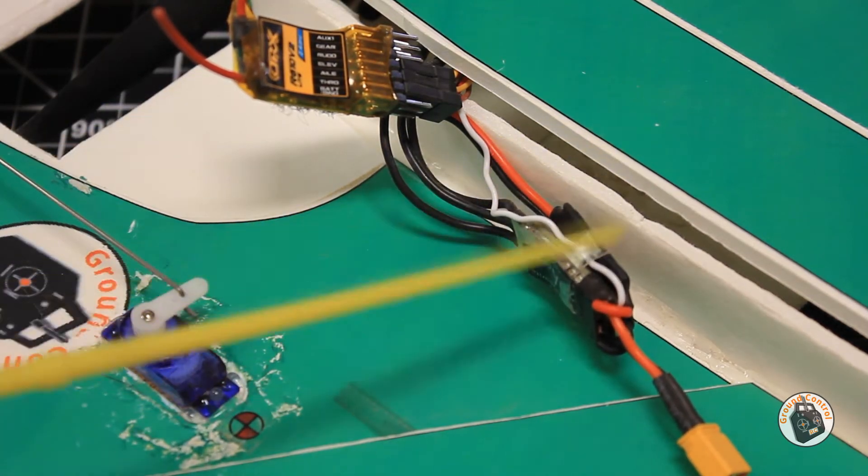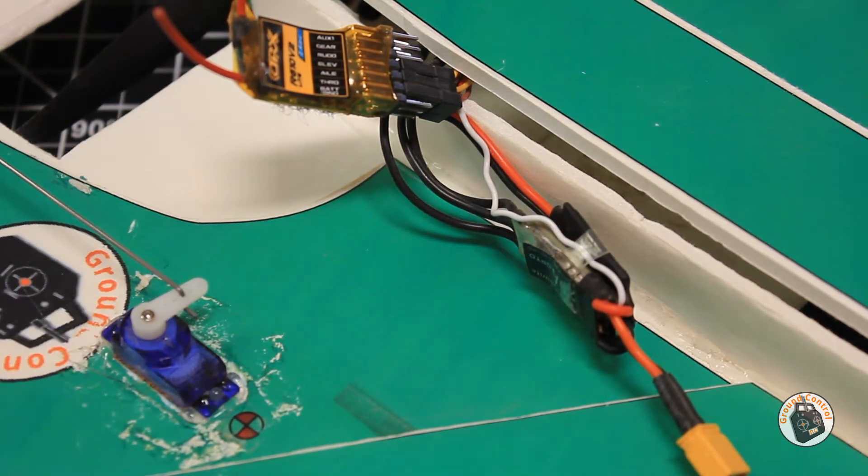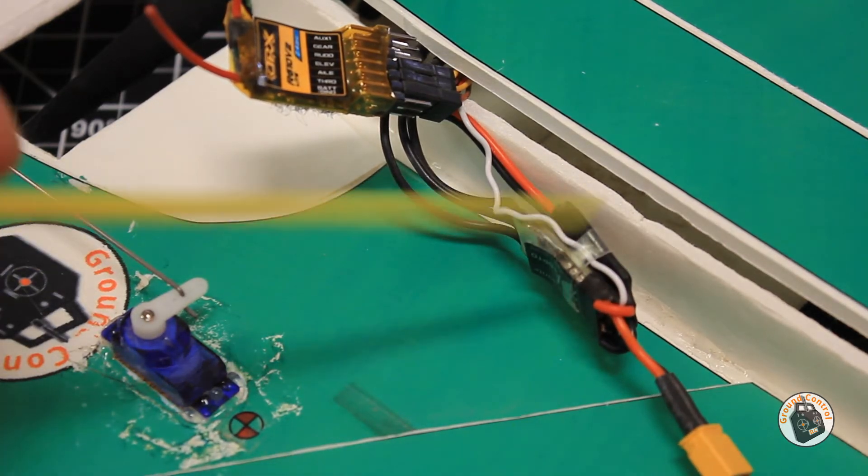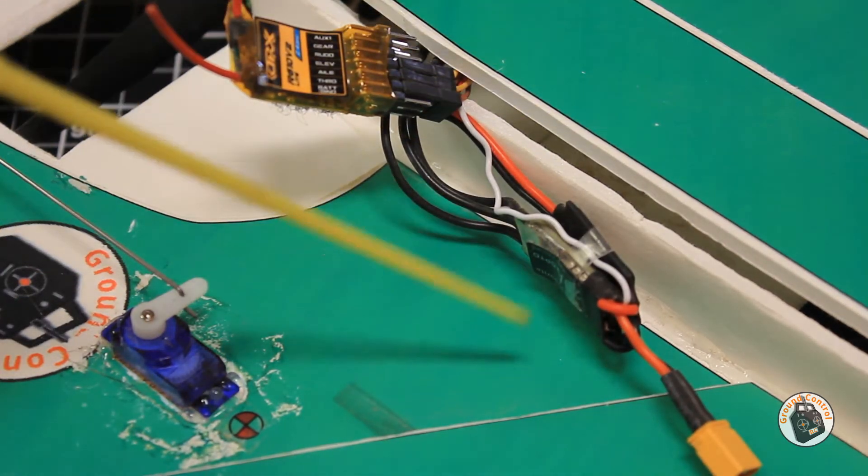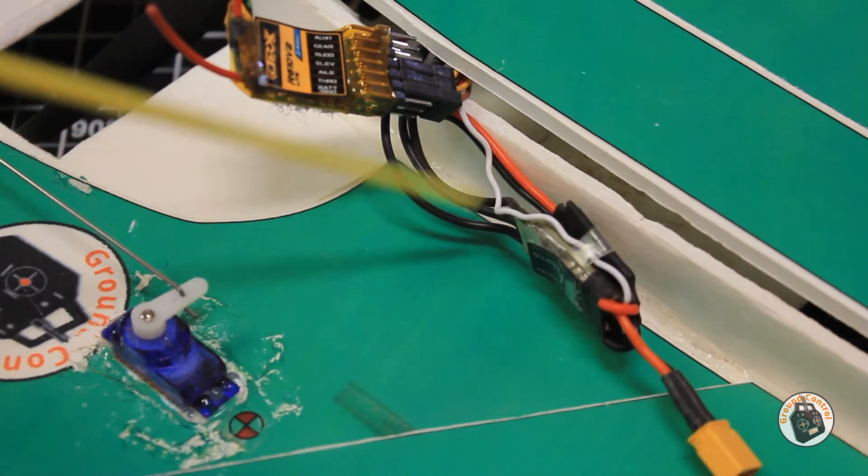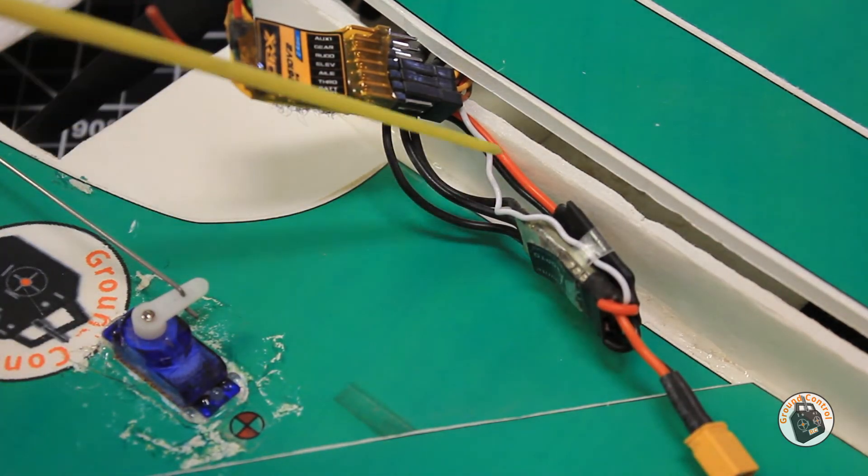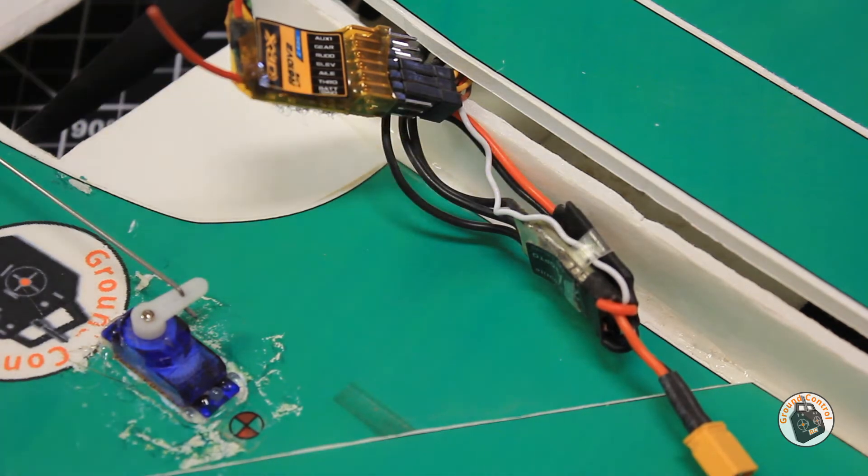So this is what I'm going to be doing for all my planes going forward. Take a look at the original tutorial on completing this task and then this updated tutorial. All you'll need to do is just take the signal wire from your opto ESC along with your ground and your power from your switching voltage regulator, and you're in business.